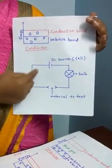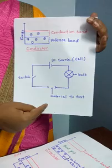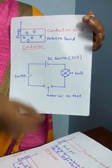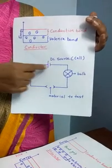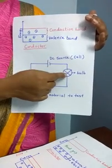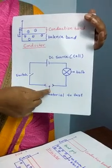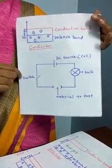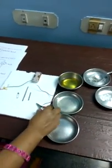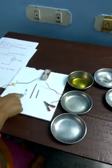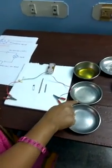Here I have made a simple circuit which we can use to test materials to determine whether they are conductors or insulators. This is the DC source, this is the bulb, this is the place where we keep the material to test, and this is the switch. Now we'll see through a small experiment how materials can be categorized as conductors or insulators.